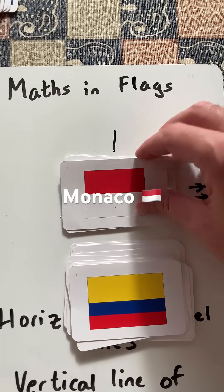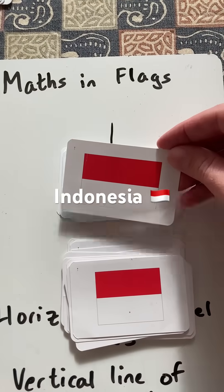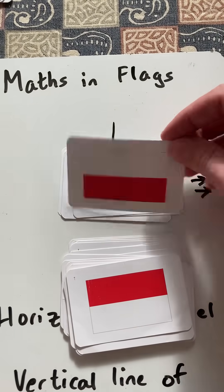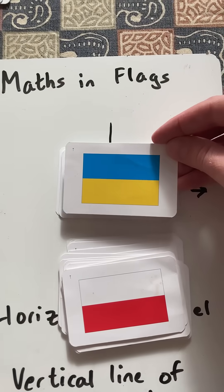And then flags that just have two sections include Monaco, Indonesia, Poland, and the Ukraine.